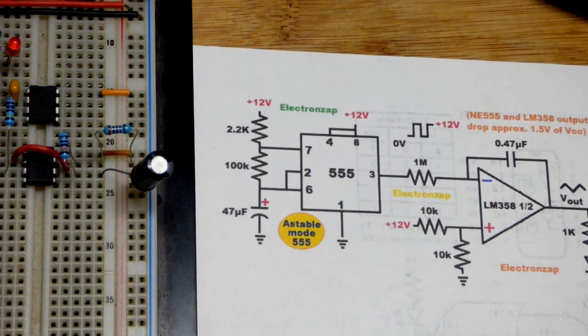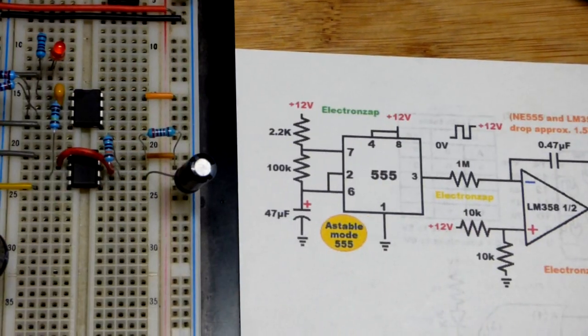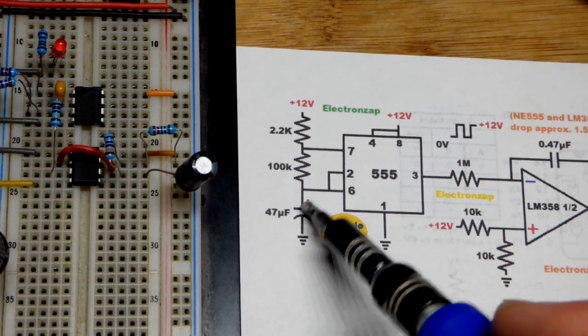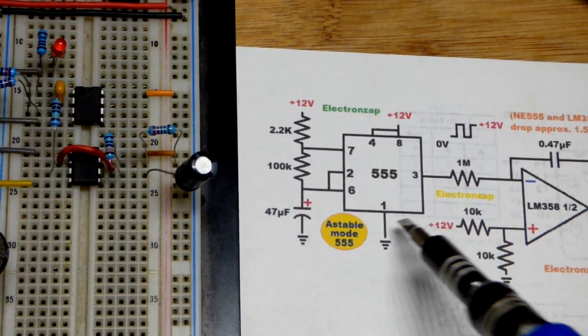The 555 timer though is a basic A-stable 555 timer. Charges through a 2.2k and a 100k, a 47 microfarad capacitor, and then discharges through the 100k.